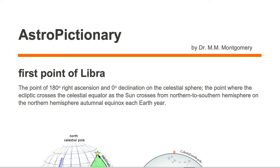The first point of Libra is the point of 180 degrees right ascension and zero degrees declination on the celestial sphere. It is the point where the ecliptic crosses the celestial equator as the sun crosses from northern to southern hemisphere on the northern hemisphere autumnal equinox each year.